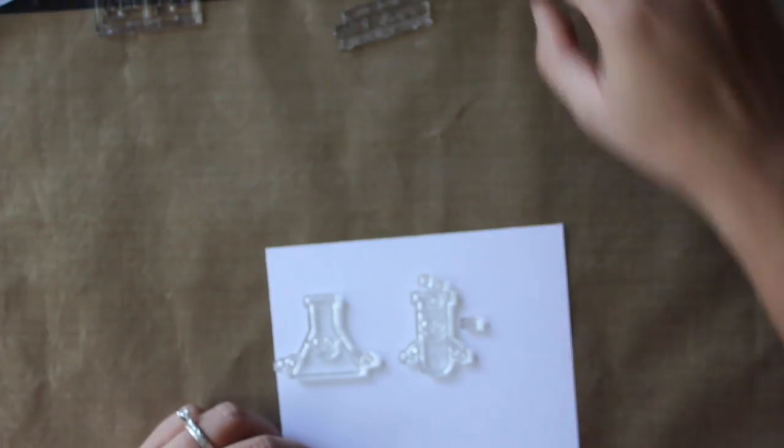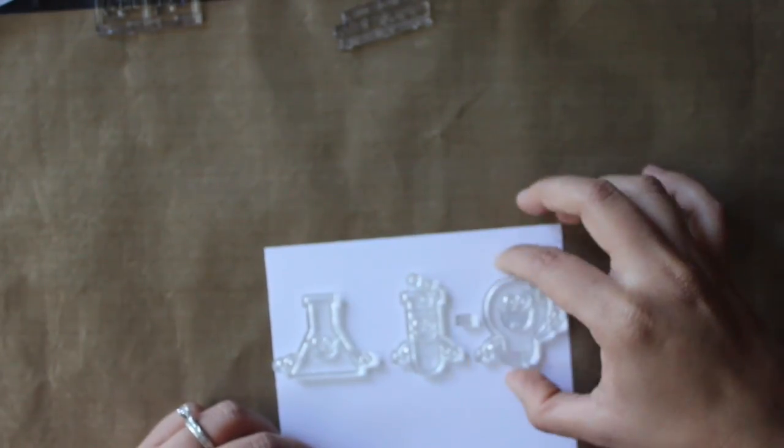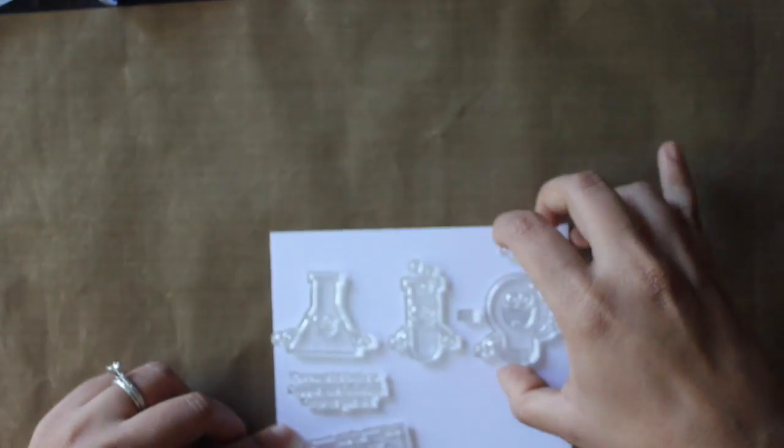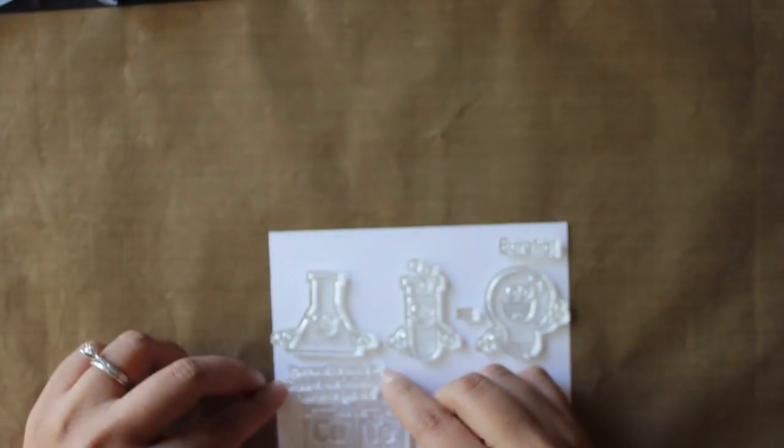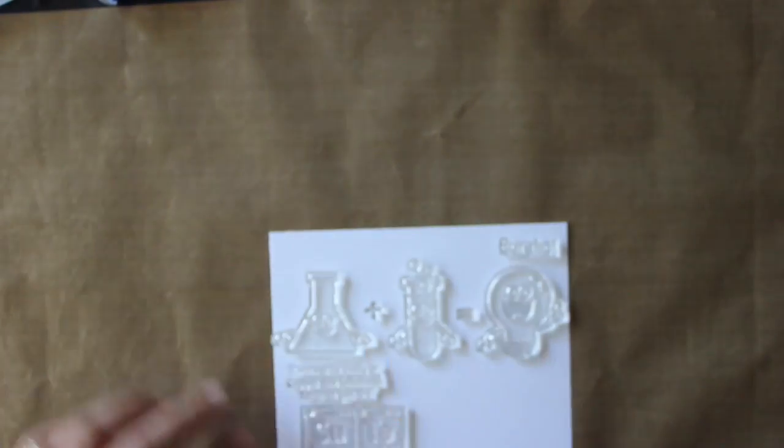I'm just going to place all the clear stamps to see my placement and how I want my layout to be. Now you can see I'm using little tiny beakers, a light bulb and a cute sentiment.